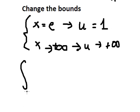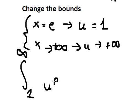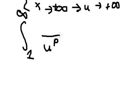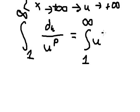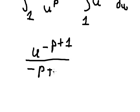So e we change for 1, positive infinity we keep as positive infinity, ln(x) we change for u, and dx over x we change for du. This gives us u to the power of negative b du. The integral of this is u to the power of negative b plus 1 over negative b plus 1, with bounds from 1 to positive infinity.